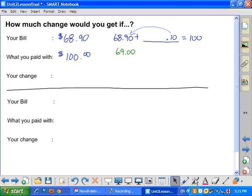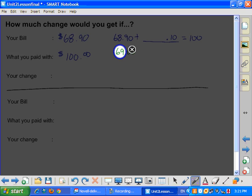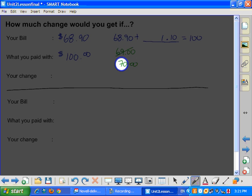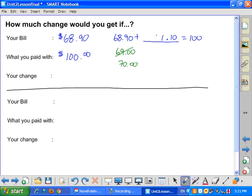So now I'm at $70. If I want to go from $70 to $100, I would have to add $30 to that, so I end up with a $31 in front. And there's the change. He will get back $31.10.